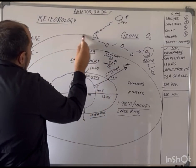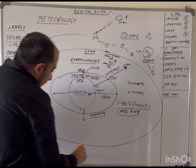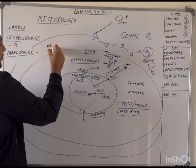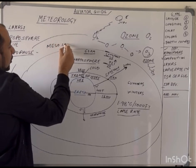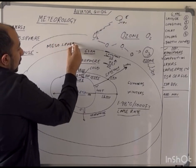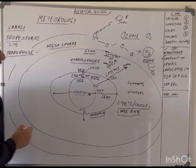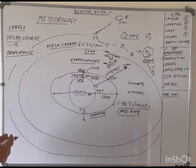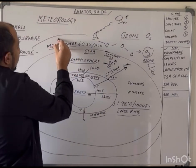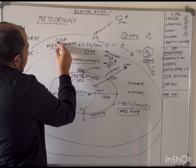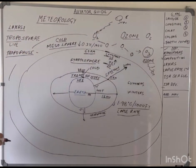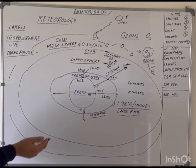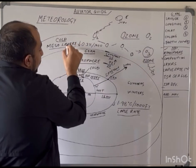From 50 km onwards is the third layer of the atmosphere, which is known as the mesosphere. In this layer, the temperature basically falls — it is the coldest layer of the atmosphere. The temperature can be fairly between minus 150 to minus 200 degrees Celsius in the mesosphere.